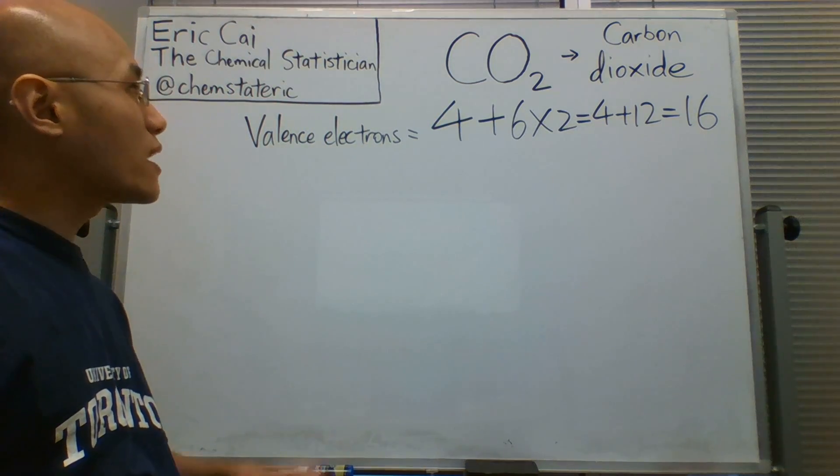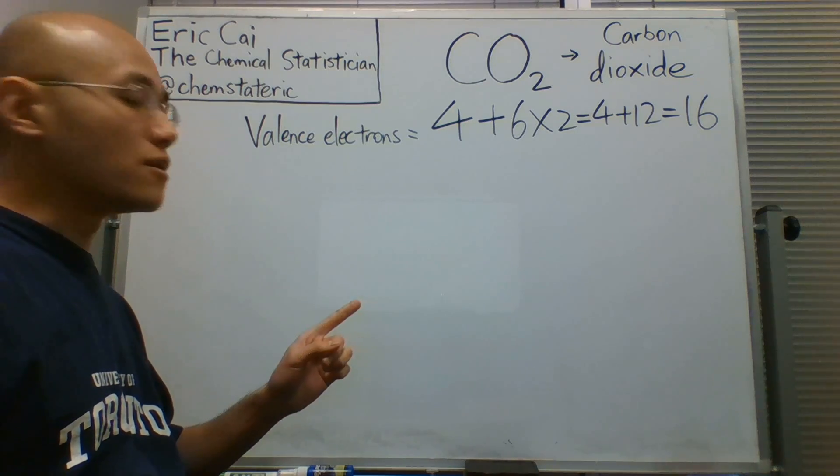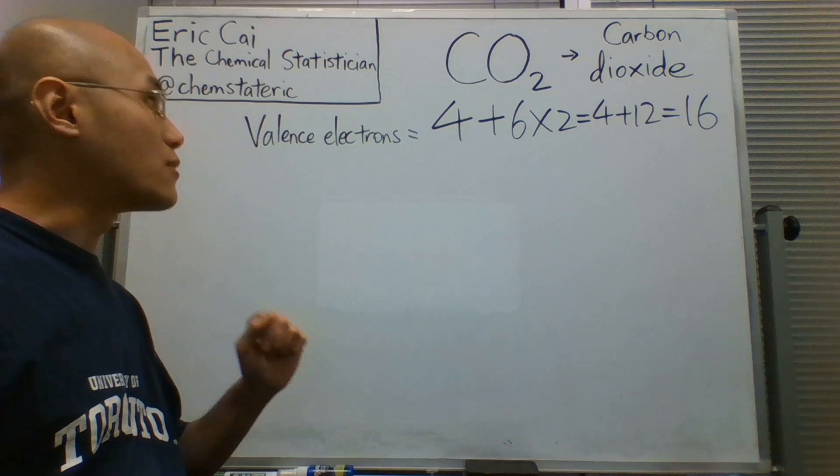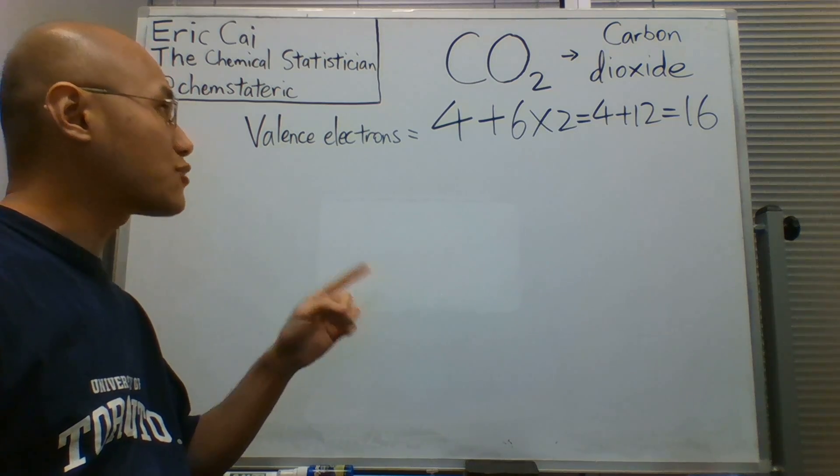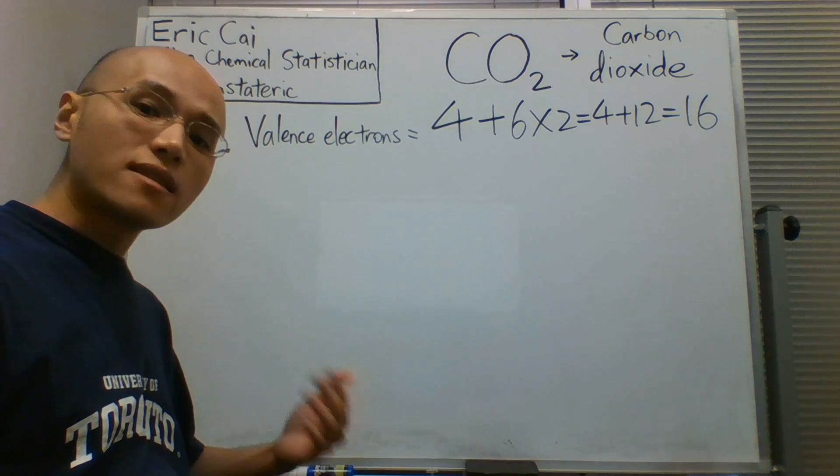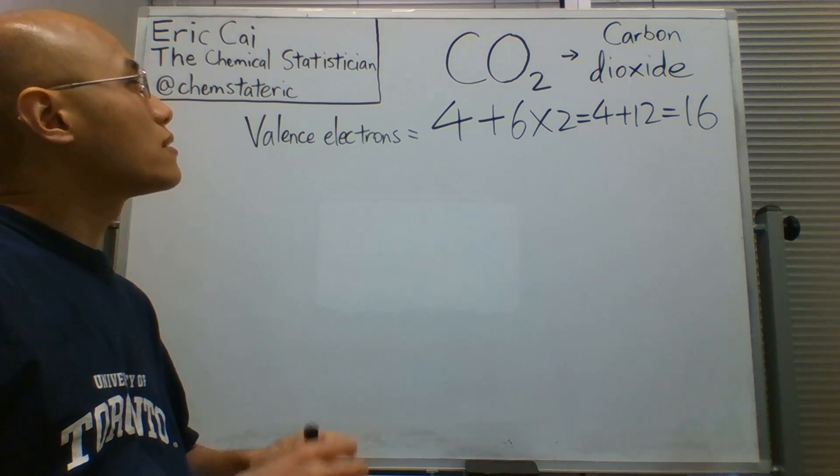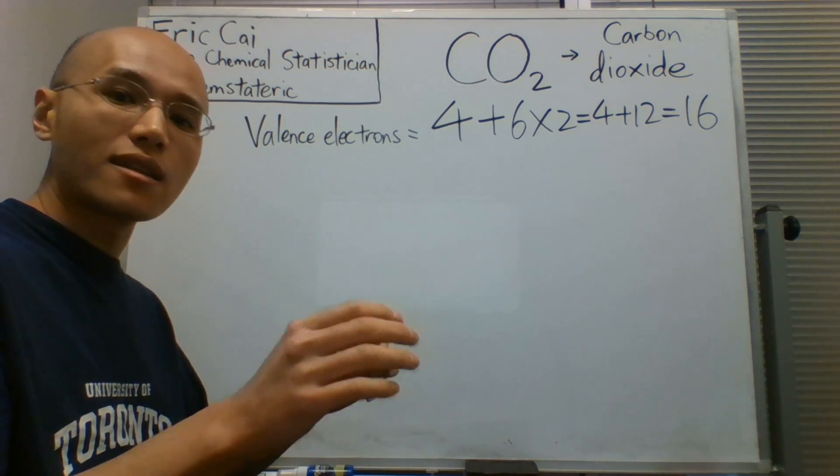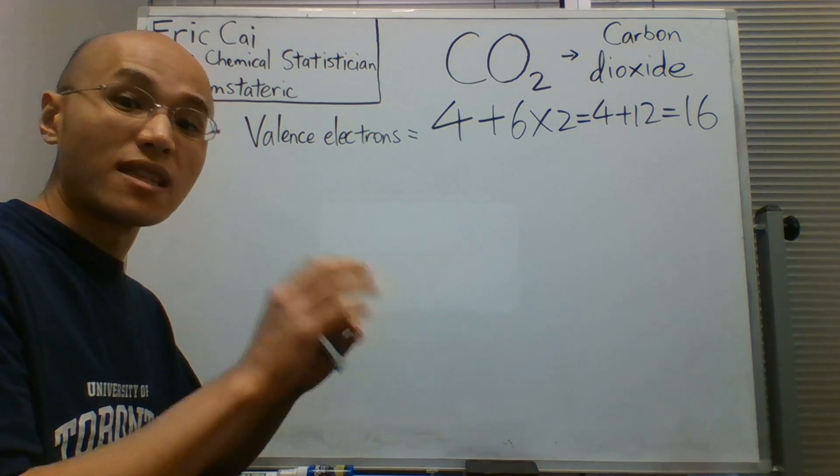Now, we know that from the periodic table, and by looking at the trends on the periodic table, that oxygen is more electronegative than carbon. So it makes sense then to put the more electronegative atoms on the periphery and put the less electronegative atom in the center.